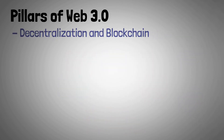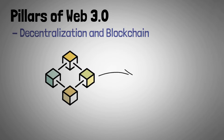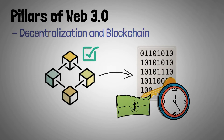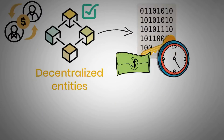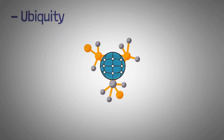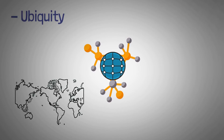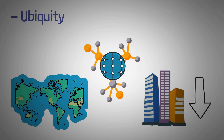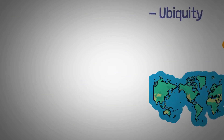Another pillar is decentralization and blockchain. Blockchain technology is a chain of blocks, each containing an irreplaceable cryptographic hash, timestamp, and transaction data from the previous block. Web 3.0 is distinguished by the use of this technology dispersed across decentralized entities that operate on peer-to-peer (P2P) protocols. Ubiquity is also a key pillar — because of decentralized servers, Web 3.0 envisions systems being available anywhere and everywhere, reducing reliance on big tech.